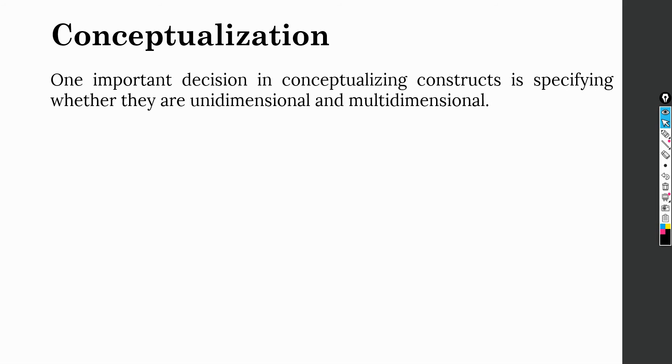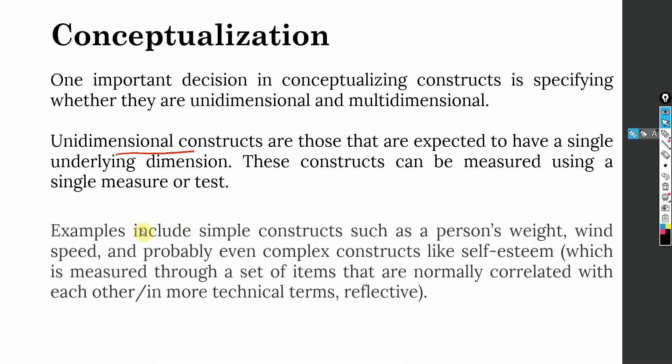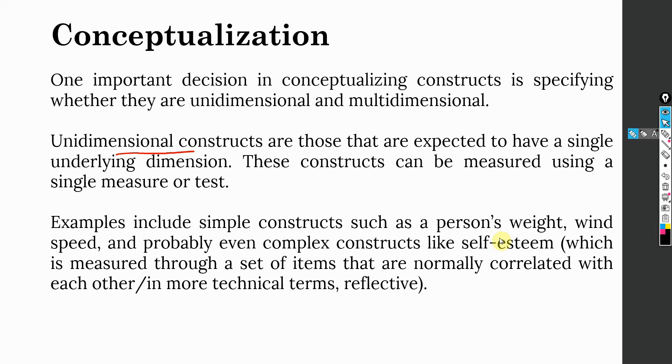One important decision in conceptualizing the construct is specifying whether they are unidimensional or multidimensional. Unidimensional constructs are those that are expected to have a single underlying dimension. These constructs can be measured using a single measure or test. Examples include simple constructs like people's weight, wind speed, and probably even complex constructs like self-esteem.